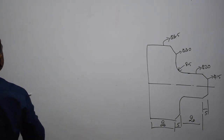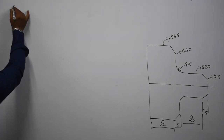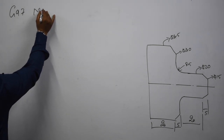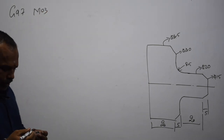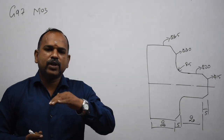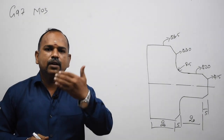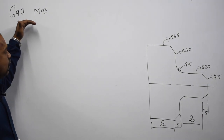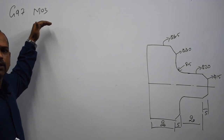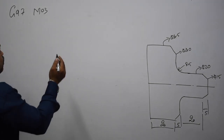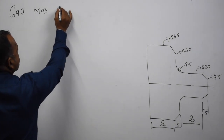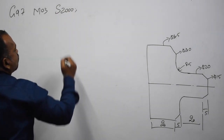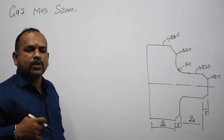In the next line, G97, M03. G97 is constant spindle speed — the spindle speed is constant and this is the rotate command. M03 is clockwise direction. The RPM is 2000. If you want to check it, it will rotate at 2000 RPM.